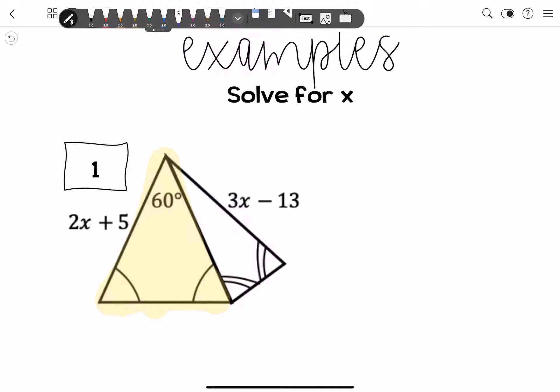So we know because these angles are congruent, we know that their opposite sides are also congruent. Awesome. So that means this is also 2x plus 5. Well, that's cool. Can't solve there. Let's look at our next triangle.